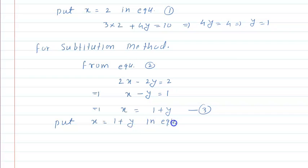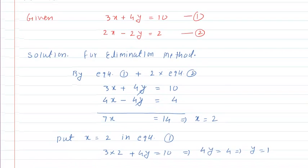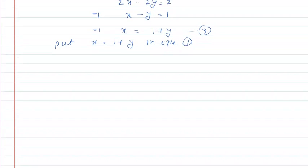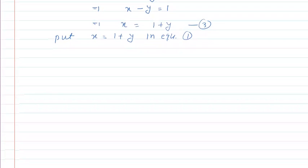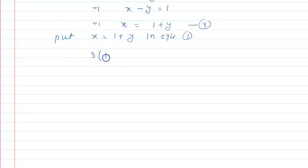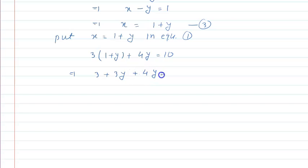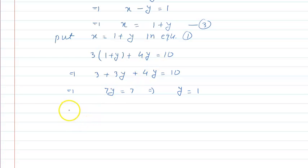Now we put x is equal to 1 plus y in equation 1, which is 3x plus 4y is equal to 10. So it becomes 3 into (1 plus y) plus 4y is equal to 10, which gives 3 plus 3y plus 4y is equal to 10, so 7y is equal to 7 — because 10 minus 3 is 7 — therefore y is equal to 1. Now we put y is equal to 1 in equation 3 to find x.